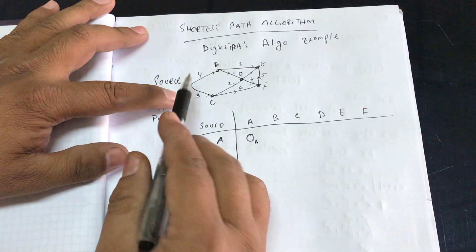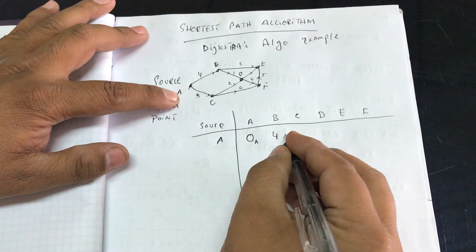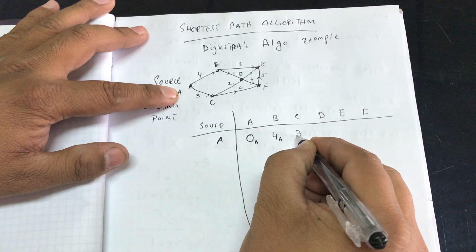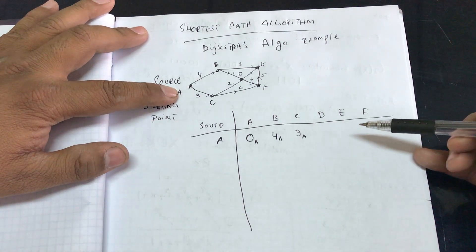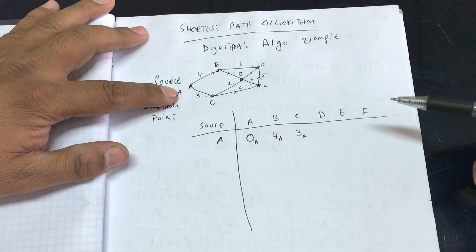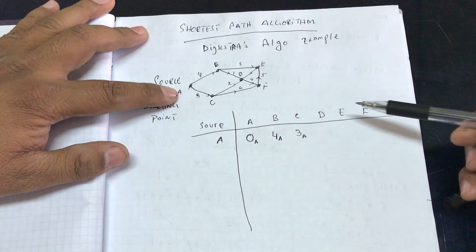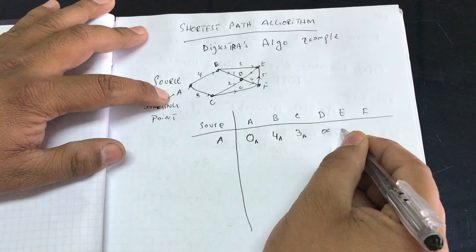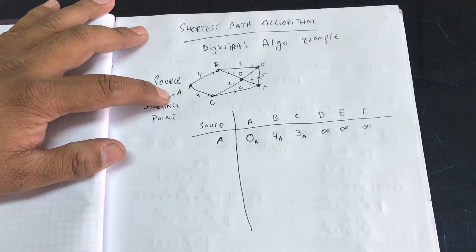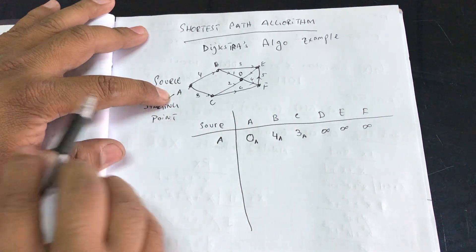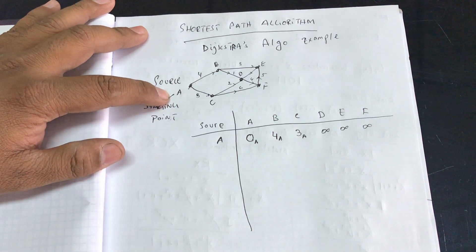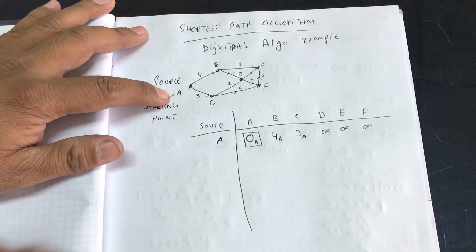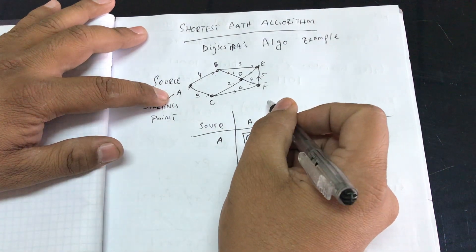If I'm at A and going to B I need to travel a distance of four, so I write 4A — coming from A. A to C is three, so I write 3A. For nodes D, E, and F, they are not directly connected to A, so their distances are infinity. I'll put a box around node A because it is now solved.